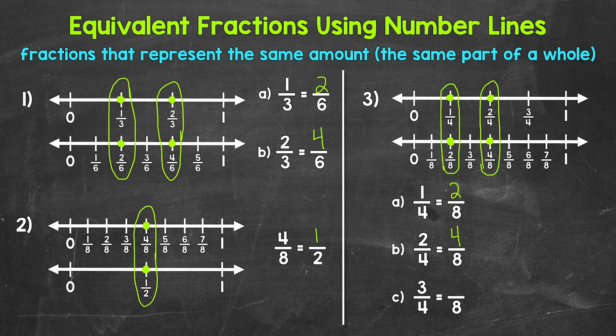And then for C, we have 3 fourths is equivalent to how many eighths? 3 fourths is right here on the number line, and looking right below, 6 eighths is at the same place. 3 fourths and 6 eighths are equivalent fractions.